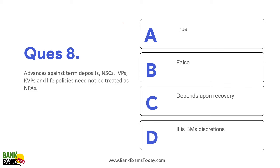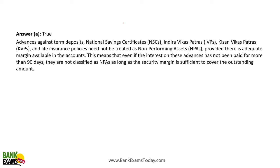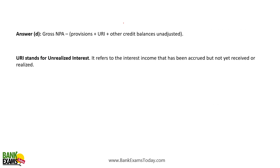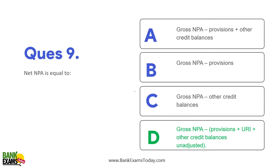Advances against term deposits, National Savings Certificates, Vikas Patras, KVPs, and life policies are not NPAs, because banks can redeem those instruments. Advances against these certificates can never be classified as NPA. Also note: Net NPA = Gross NPA minus provisions, minus unrealized interest, minus other unadjusted credit balances.